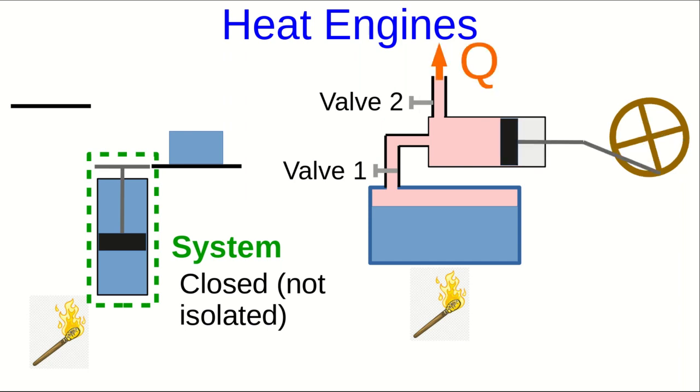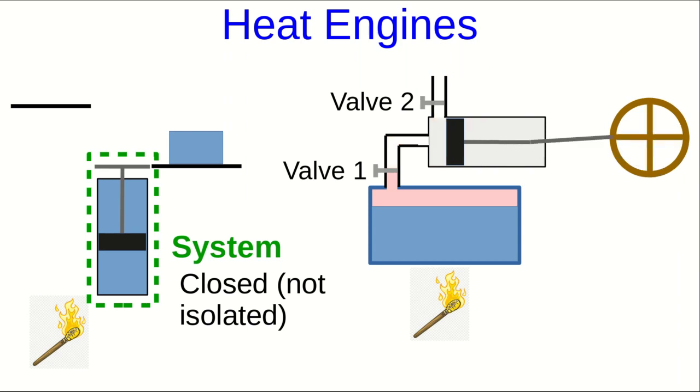Valve one closes when the piston is at its maximum expansion. And then valve two opens, and the steam rushes out, carrying heat out with it, and then closes, returning it to its original state so that this is a cycle. Notice now that this system is not closed. This system is open, because not only is there heat exchange with the environment and work done on the environment, so energy in and out of the system, but the system is also exchanging matter with the environment. And this is perhaps more common for heat engines.